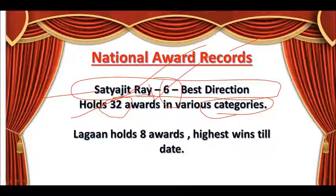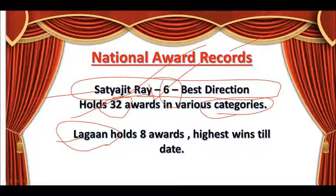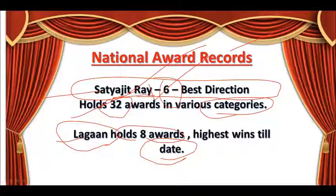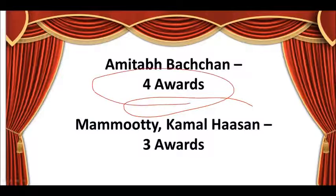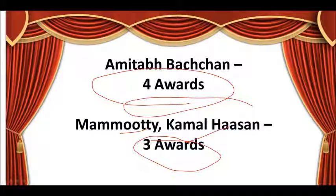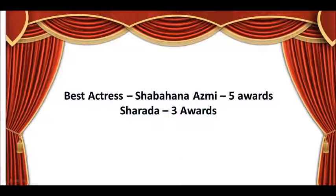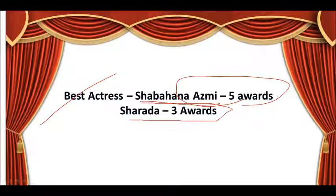Now for all-time records in the National Film Awards. The Lagaan movie, the cricket-based film, holds the record with 8 awards - and this year one movie also has 8 awards, making it the highest this year. Amitabh Bachchan holds 4 best actor awards; Mammootty and Kamal Haasan have 3 each. Best actress record: Shabana Azmi has 5 awards, and Telugu film actress Sharada has 3.